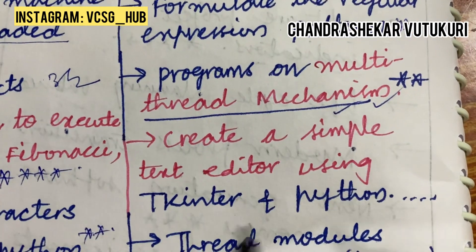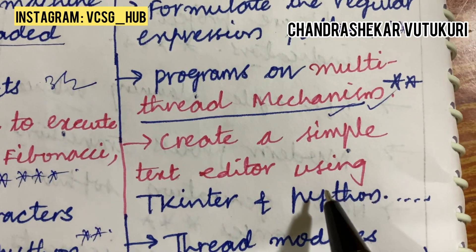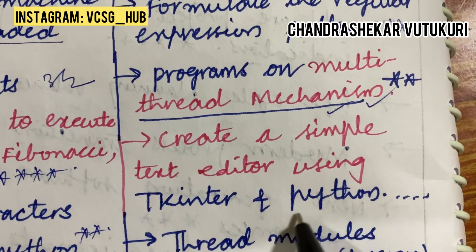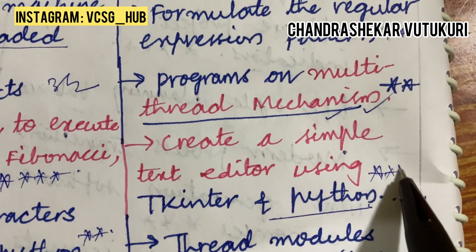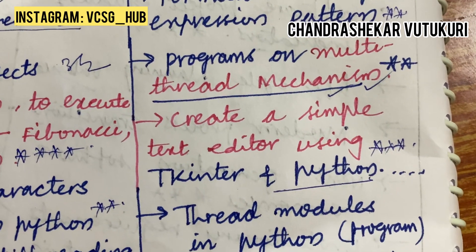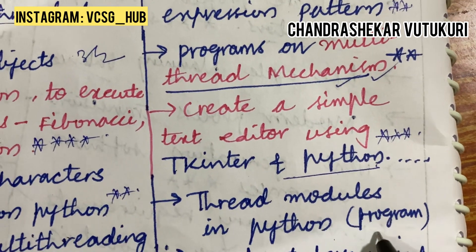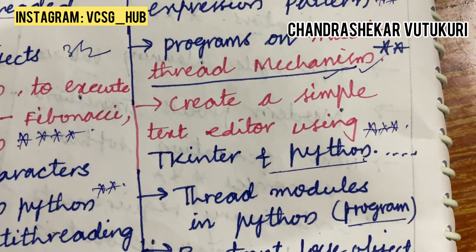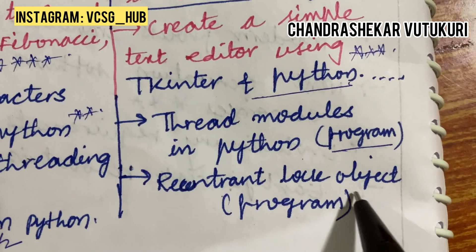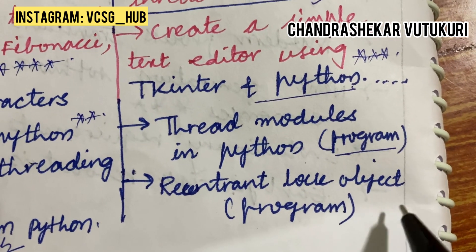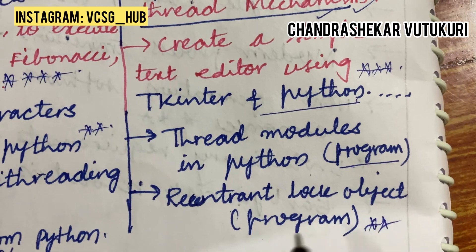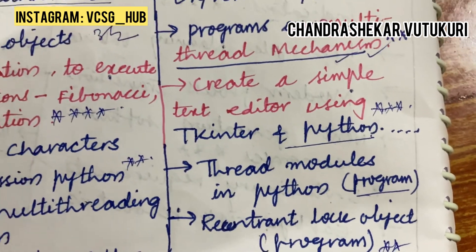Create a simple text editor using Tkinter and Python is said to be a topmost and gunshot question. Thread modules in Python — write a program related to it and the reentrant lock object program may be a short question.